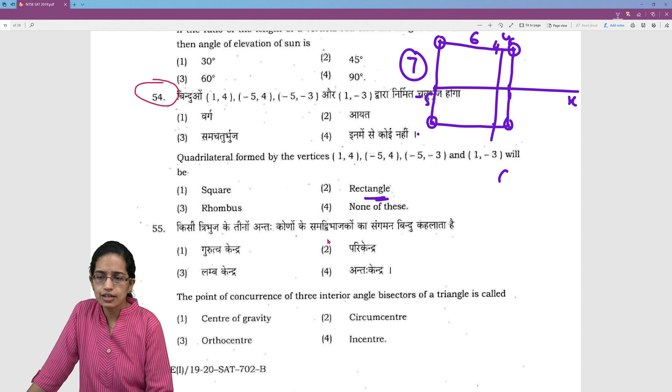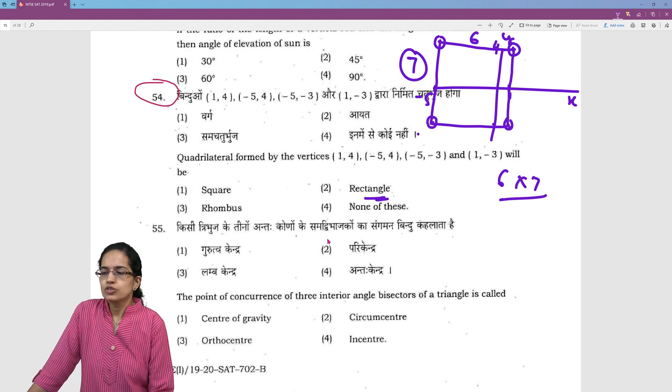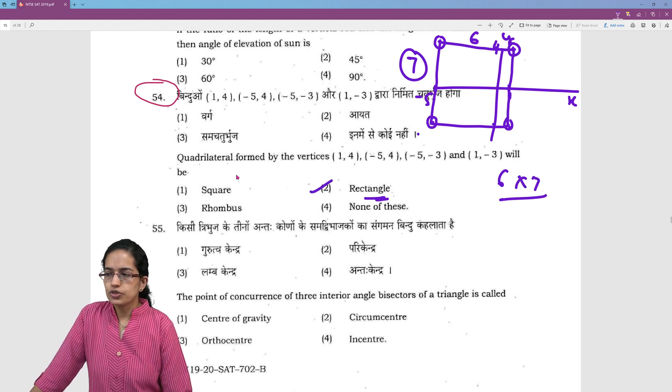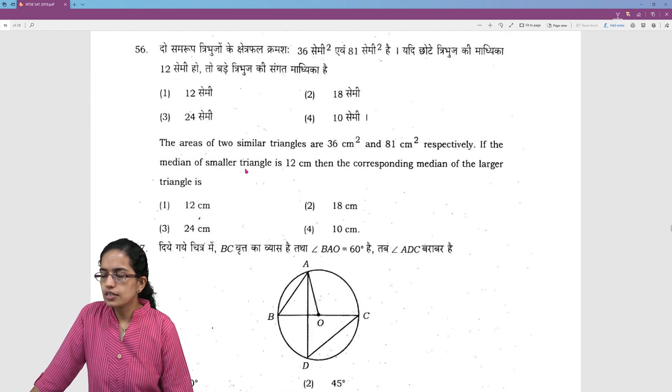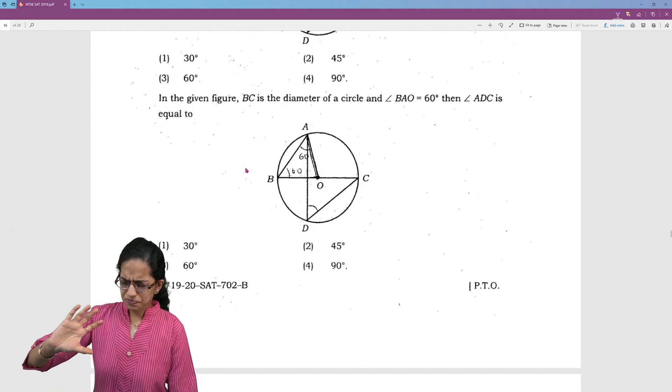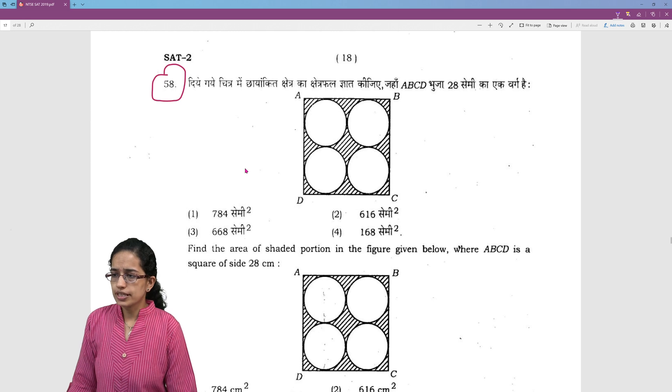So it is a rectangle of 6 by 7 side. So the answer would be rectangle. So these kind of questions which are based on the very fundamentals of the problems related to coordinate geometry are asked.